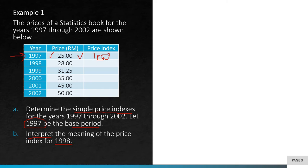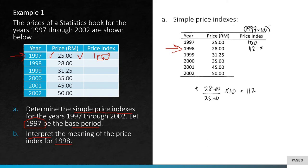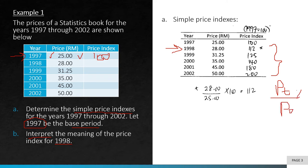Now let's calculate the simple price indexes for the other years. For 1998, current price over base price: 28 over 25 times 100 gives 112. You should pause the video and try to calculate all the simple price indexes yourself. Once you've finished, you can compare your answers. All you have to do is divide the current price by the base price, then multiply by 100.